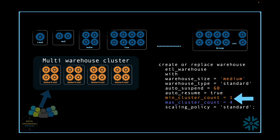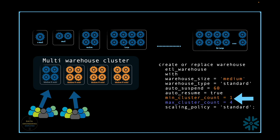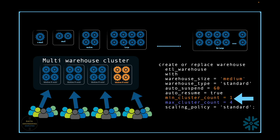When a workload is assigned to this virtual warehouse by executing a query, it spins up a cluster of medium-sized — meaning a 4-node cluster — and it starts serving the user. Since it is a multi-cluster compute, if the workload increases and the first cluster is not able to serve the incoming queries and we see a lot of query queuing, a new instance of a 4-node cluster spins up again by Snowflake to manage the additional queries. As this workload concurrency continues to grow, more clusters are created and added to this multi-cluster virtual warehouse environment by Snowflake.